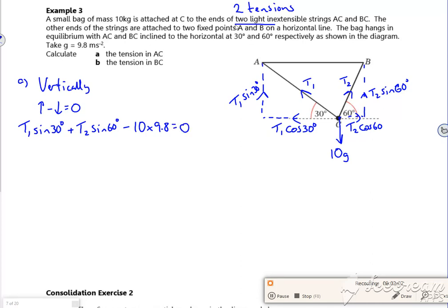So you can see you can create like a little simultaneous equation there. So sin 30 T1, sin 60 T2 is equal to 98. So that's one equation I can use to solve.